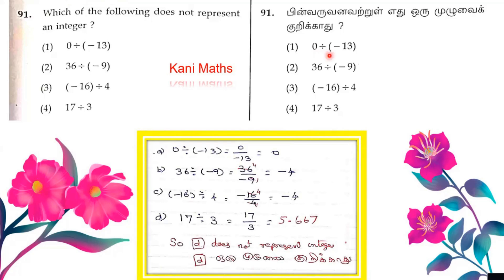We can divide 0 by minus 13. We can divide minus 4 by minus 16, which is minus 4. But 17 divided by 3 is minus 5.667 — that's a decimal number. That's why option D does not represent an integer.